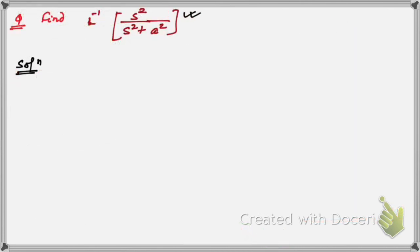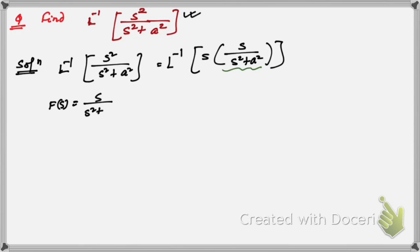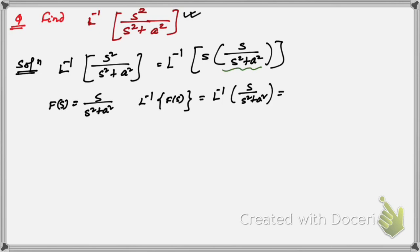Now let's solve the next question: inverse Laplace transformation of s²/(s²+a²). It can be written as the inverse Laplace transformation of s into s/(s²+a²). We take f(s) = s/(s²+a²). The inverse Laplace transformation of f(s), which is s/(s²+a²), equals cos(at). So this is our f(t).